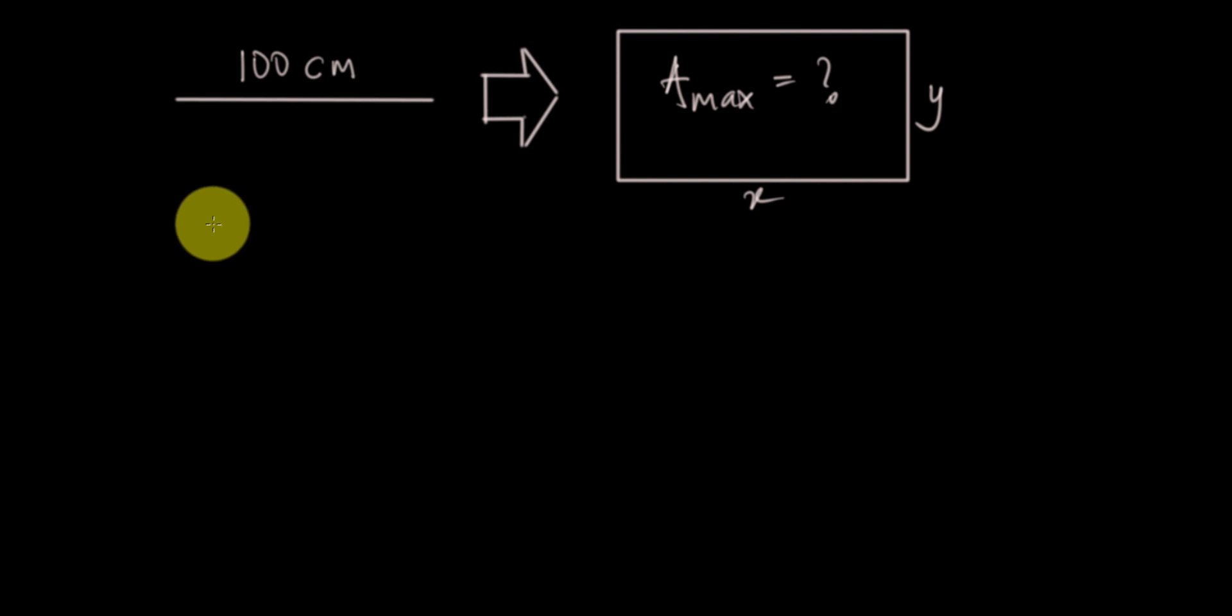First we find the perimeter. This is a rectangle, so x plus y plus x plus y equals 2x plus 2y.